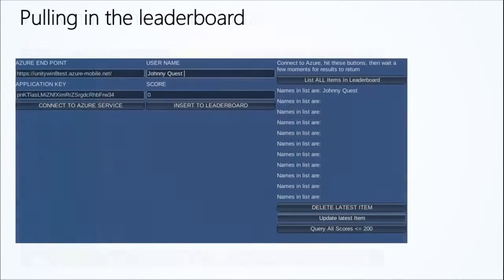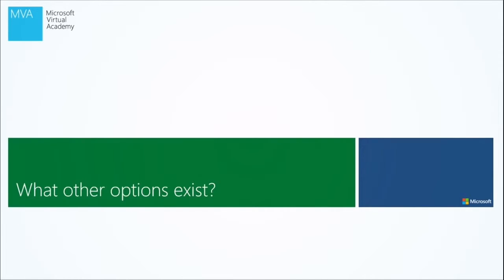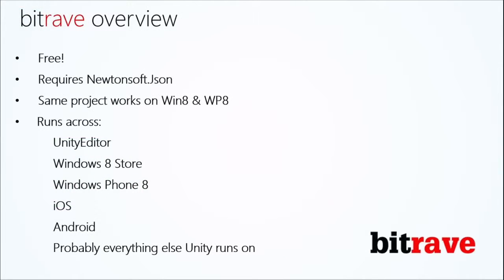We added Adam with his fine score of 300, and pulled him into the leaderboard itself. But now we have Prime 31 — what other options exist? Well, I quickly browsed the internet and saw that another option was BitRave. It requires Newtonsoft.json, so this might be a bit of a downfall for some people because that's a premium plugin for Unity.